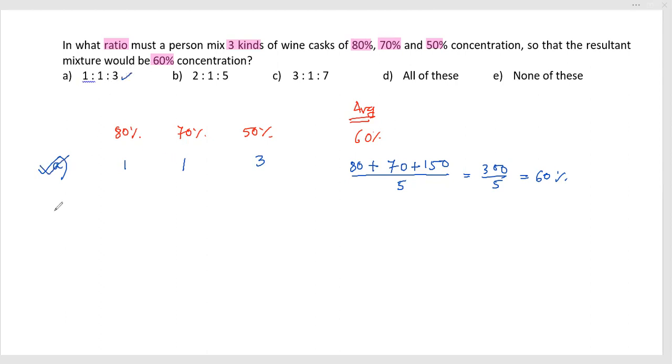which is given as 2:1:5. If I go through the similar process, it should be 2 into 80 (160), 70, plus 5 into 50 (250), divided by the sum—2+1+5 is 8.